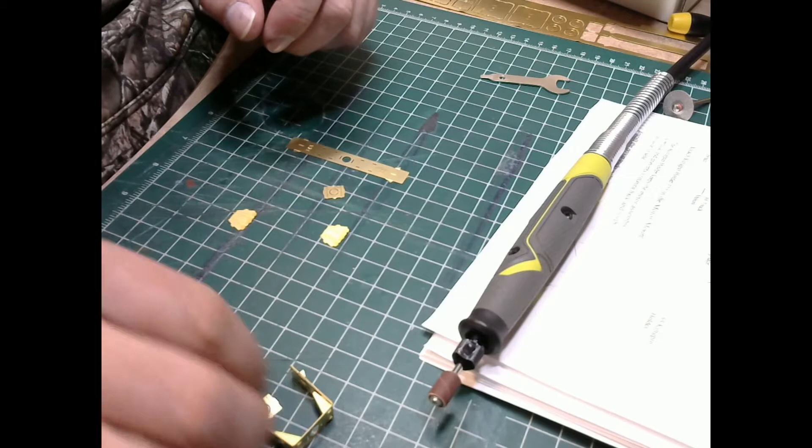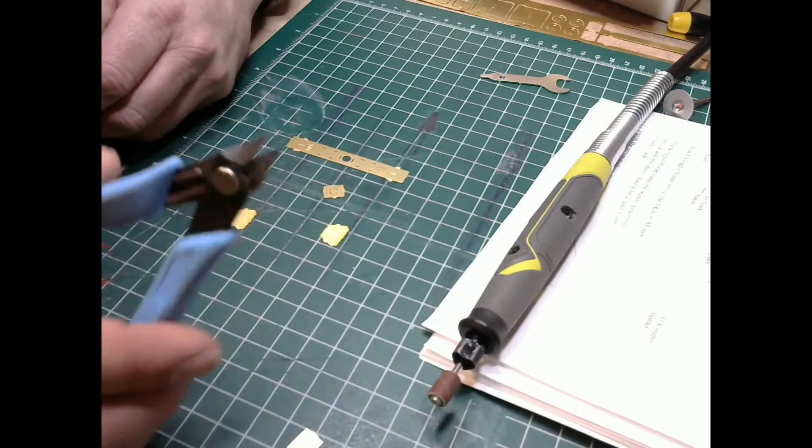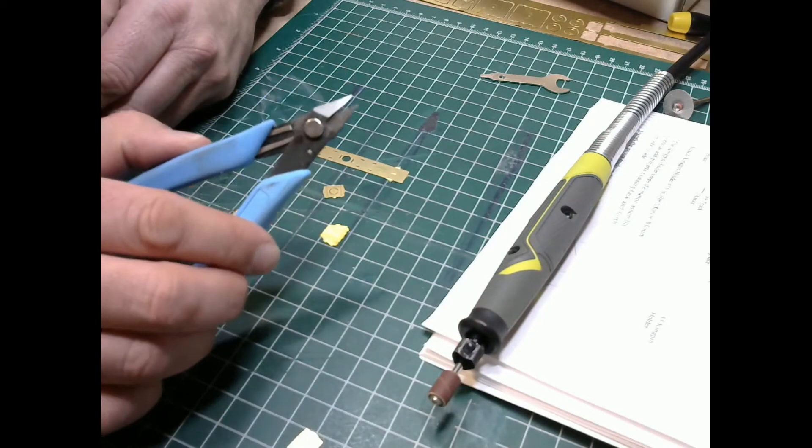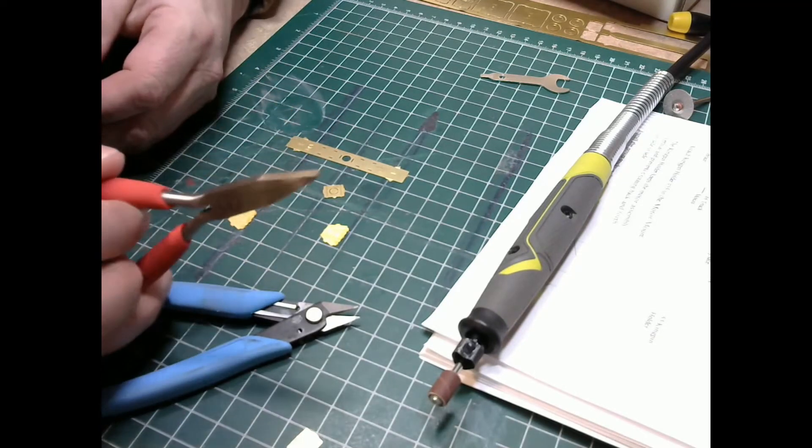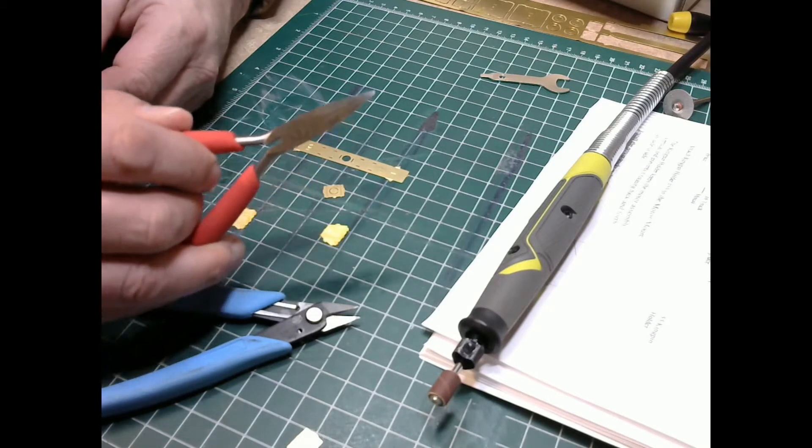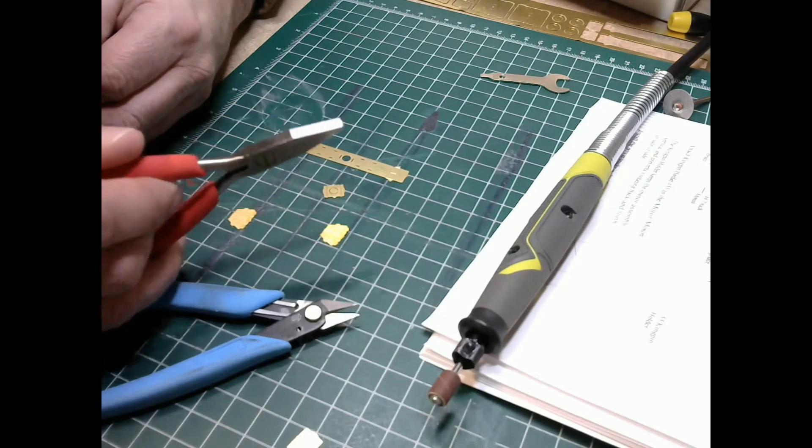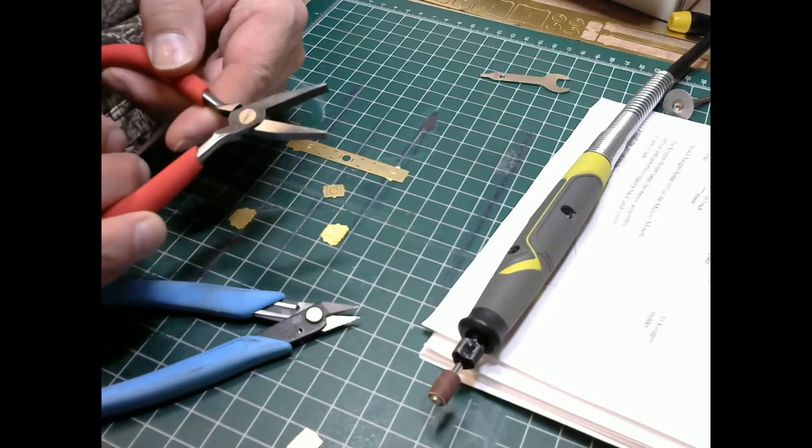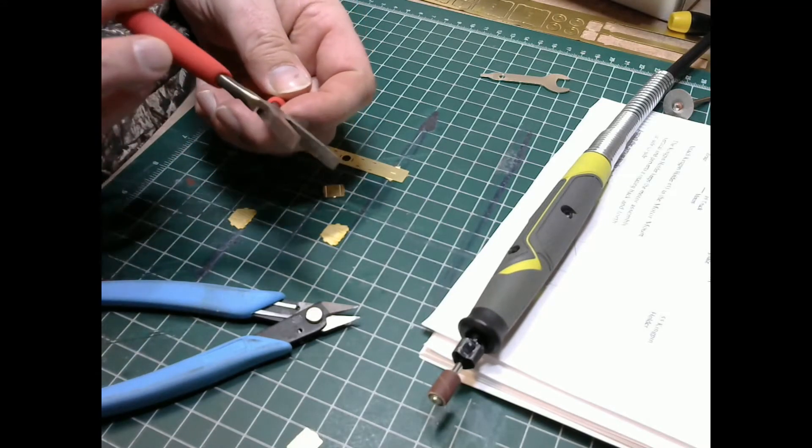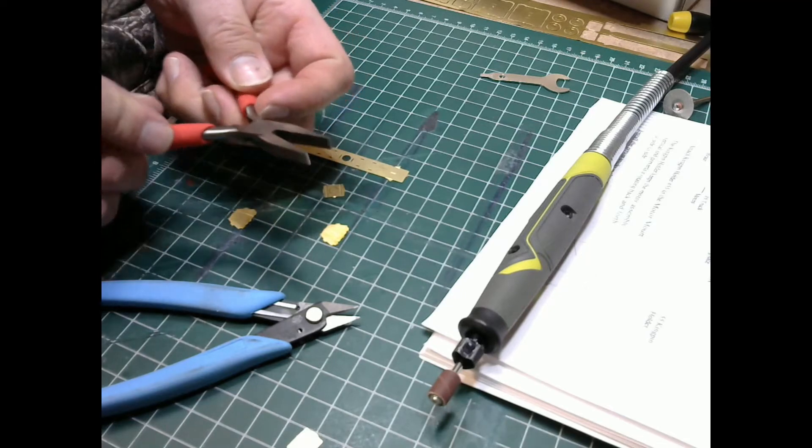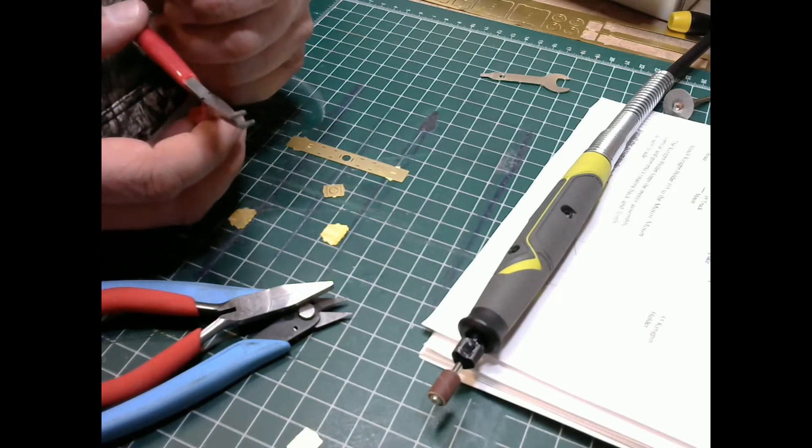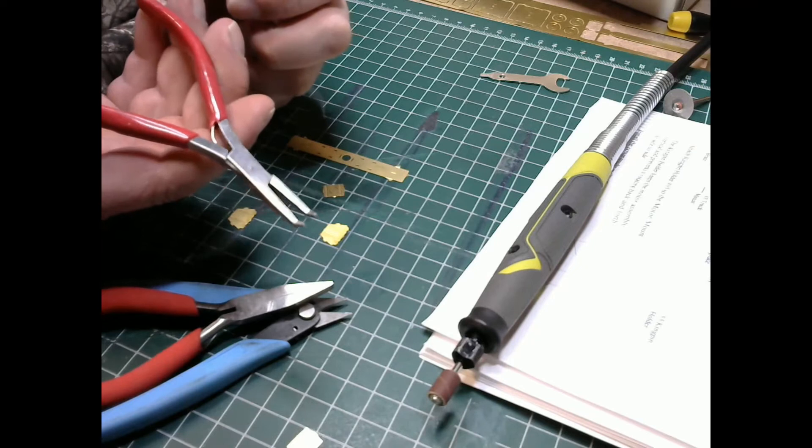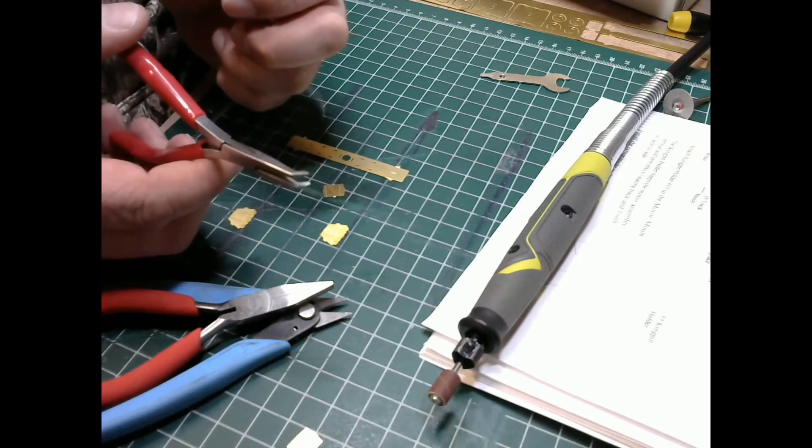This is a Xuron sprue cutter. It works really good for cutting these brass pieces off of the sprues. This is just a plain pliers, but it has no teeth to it and square 90-degree machined edges, so bending these pieces makes it really nice and you don't damage the brass at all. Same thing with this one, except this is much smaller and it's got a little angle bend to it at the end. This is going to be used for holding on and bending a lot of the smaller parts. Comes in pretty handy.